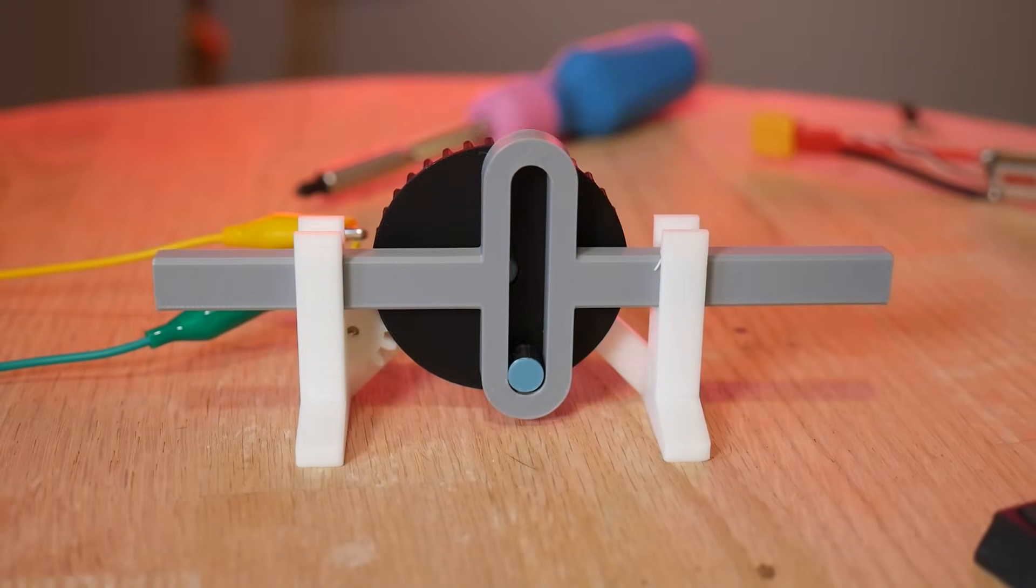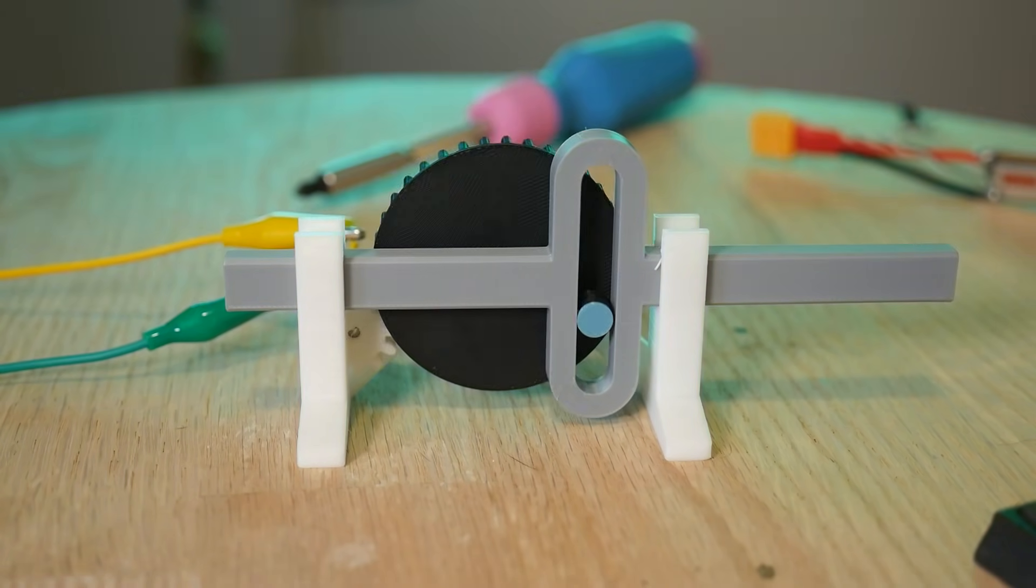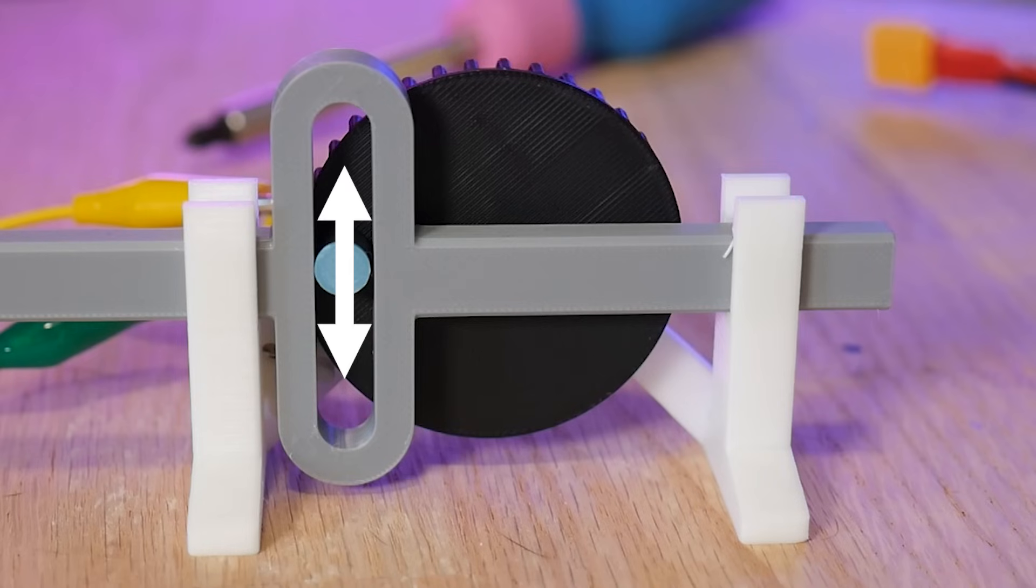And honestly, for most applications, a crank makes more sense, because the Scotch yoke has one serious downside. Friction. There's a lot of it. The pin slides up and down the slot, and the yoke slides back and forth between the guides. And sliding friction is bad news for the longevity of a mechanism.